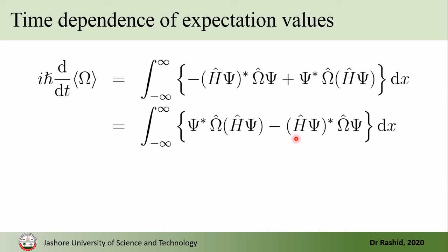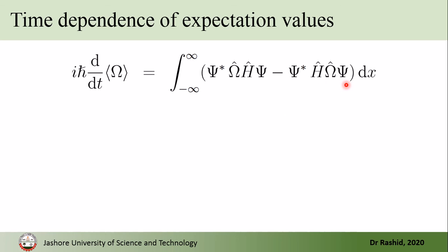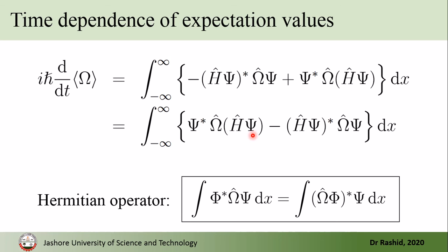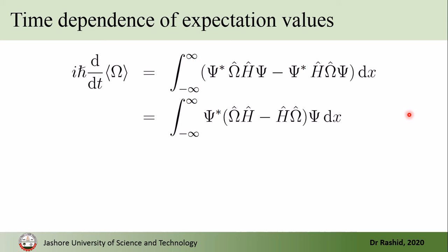So we see a complex conjugate of a function multiplied by another function. Since H-hat is a Hermitian operator, we know that we can move the operator from the first function to the second function. By using this definition, from that line we obtain this result. In the first term, I just dropped the brackets. After simplification, we have this expression.